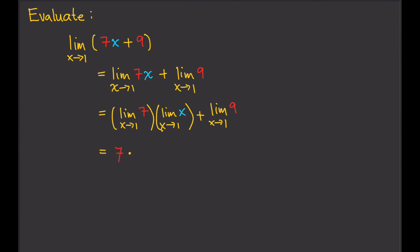So 7 times the limit of x as x approaches 1 — by the identity theorem, the limit of x as x approaches 1 is 1. So that gives us 7 times 1, plus the limit of 9 as x approaches 1. Since 9 is a constant, that's just 9. So 7 times 1 is 7, plus 9 is 16. Therefore, the limit of 7x plus 9 as x approaches 1 equals 16.